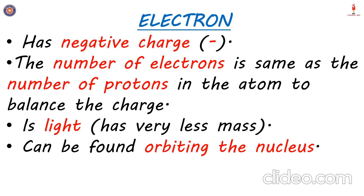Moving on to electrons: an electron has a single negative charge, just like a proton has a single positive charge. If an electron is added to an atom, it will add a charge of minus one. Next, the number of electrons in an atom is the same as the number of protons when the atom is in a balanced state — the positive charge of protons is balanced out by the negative charge of electrons. They cancel each other out, resulting in the atom having a balanced state. If there are different numbers, the atom will be unbalanced.